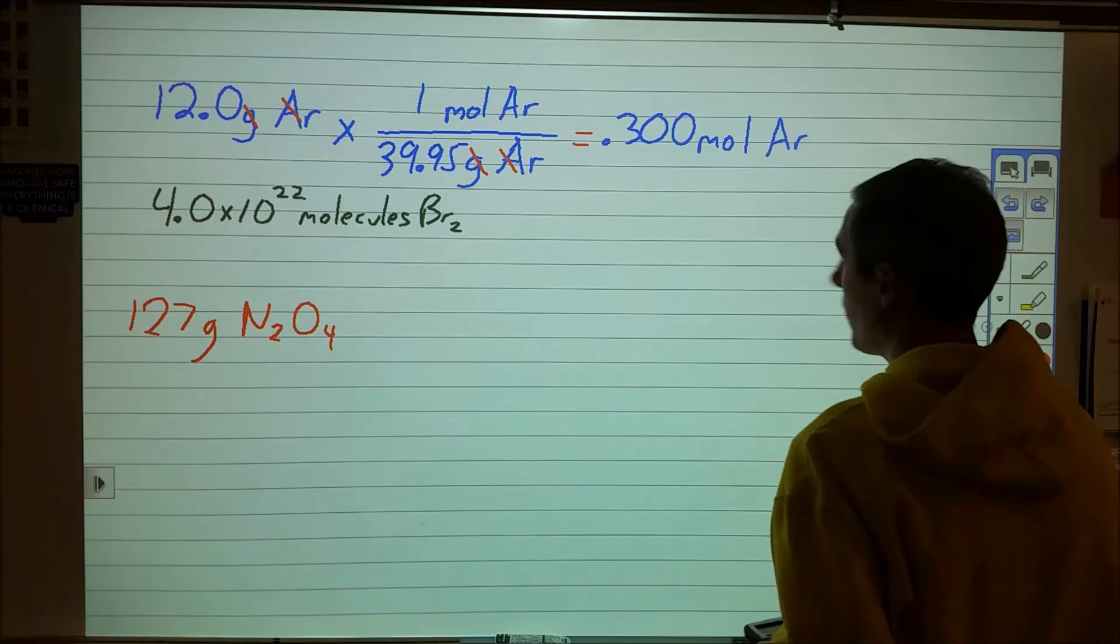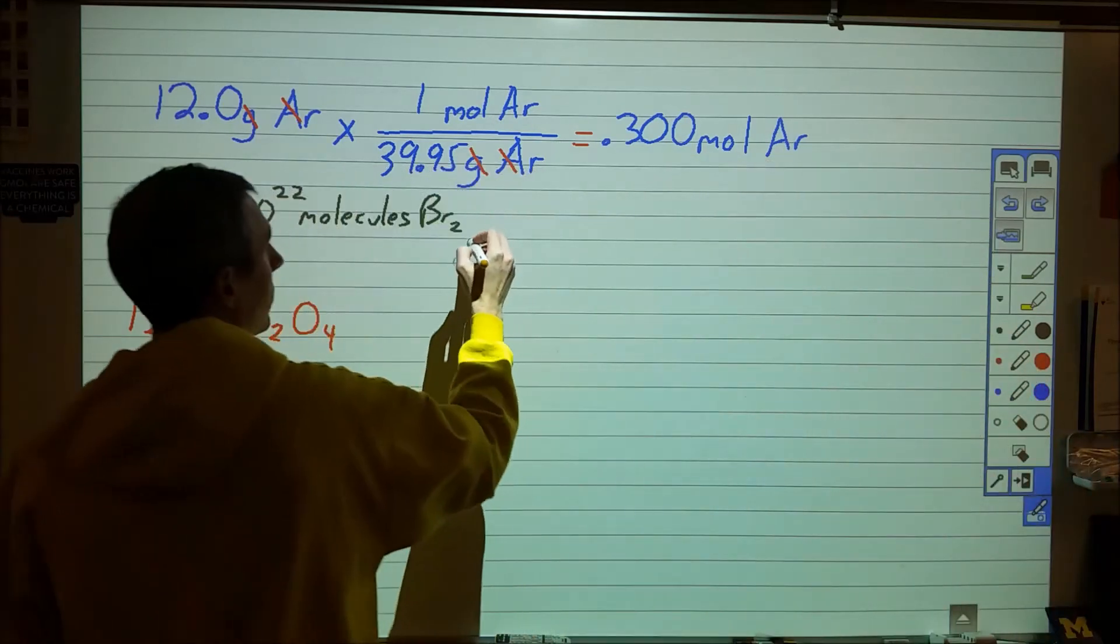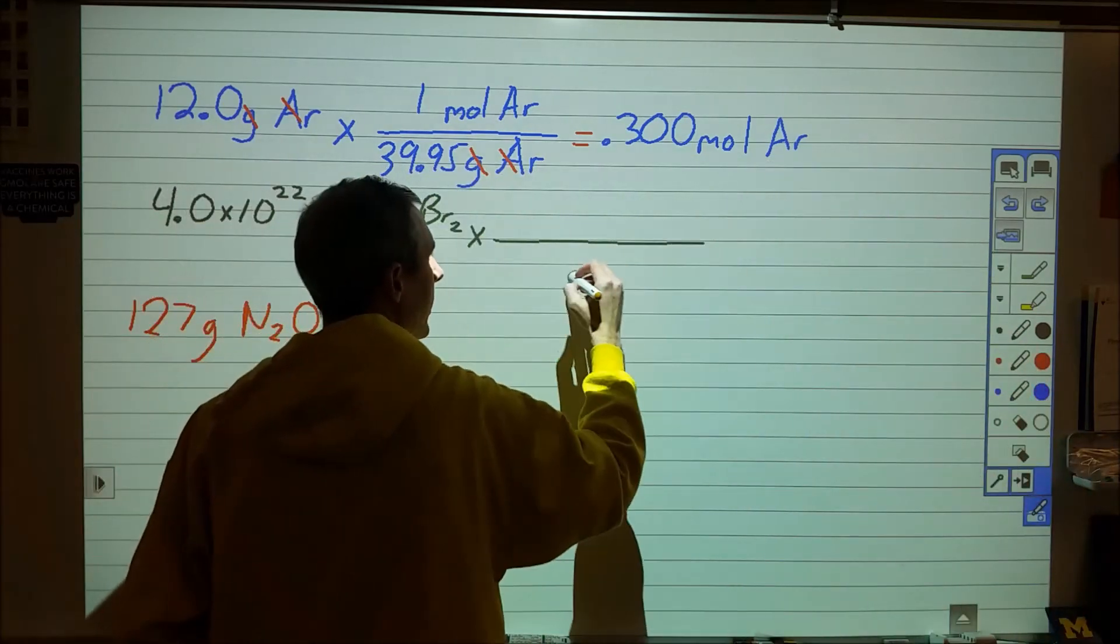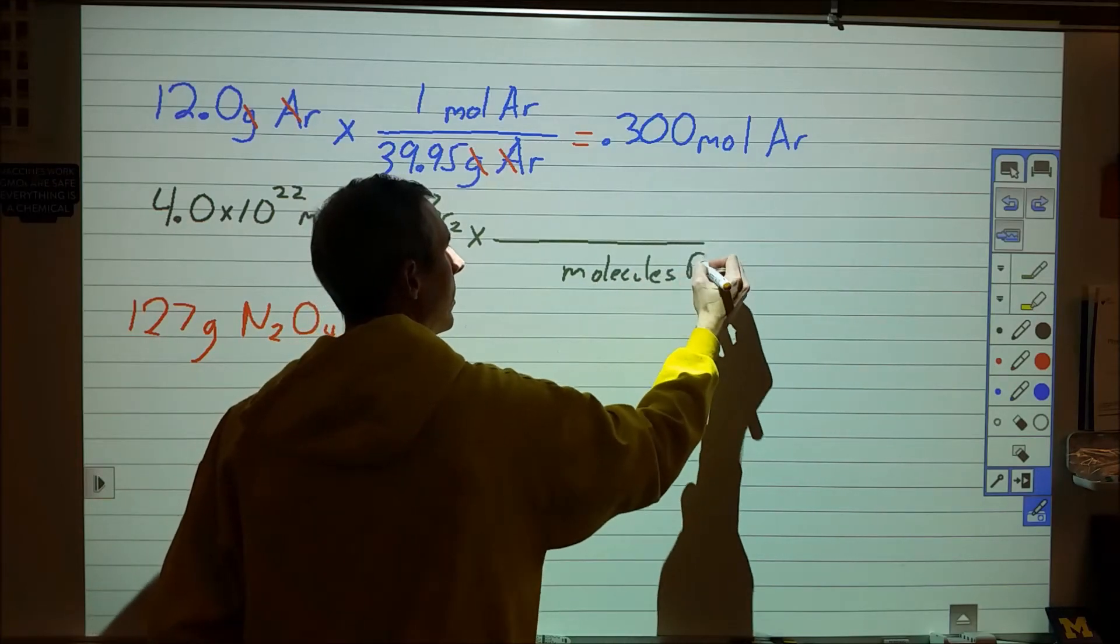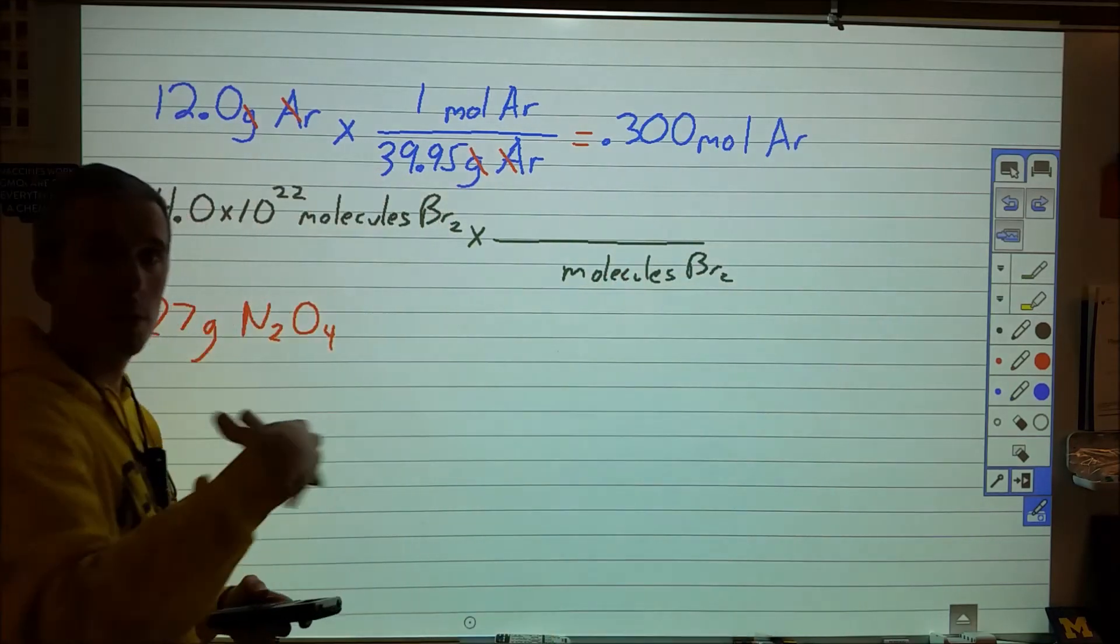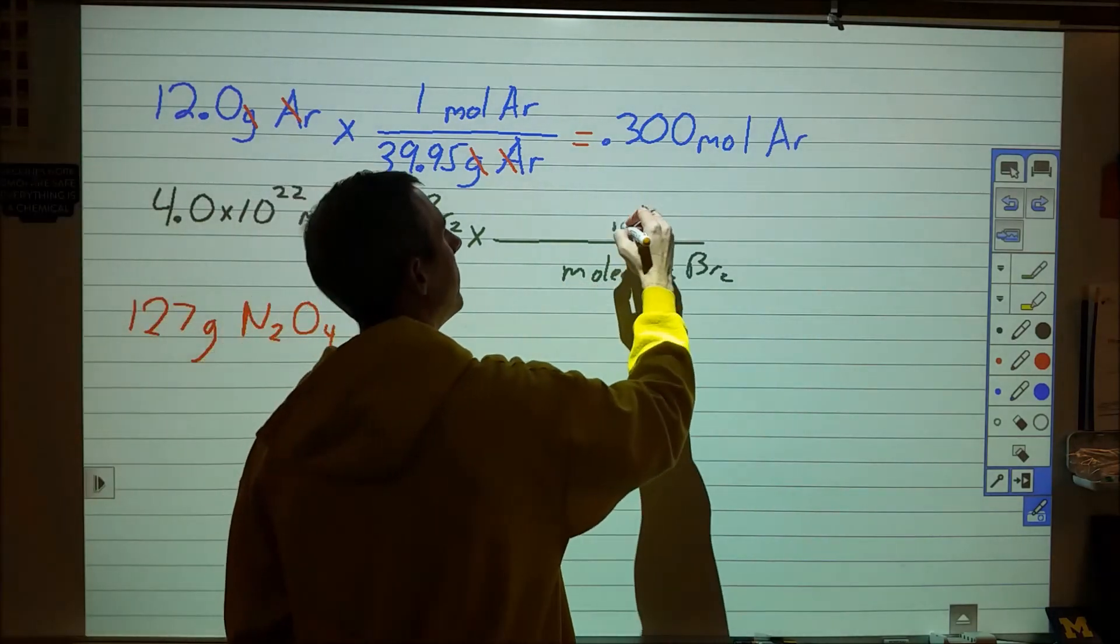In the second one here, I have 4 times 10 to the 22nd molecules of bromine. So again, I'm going to take the units, molecules, along with the chemical, put them there. Now I'm not in moles, so I want to change to moles. Don't confuse that just because there's a mole written there.